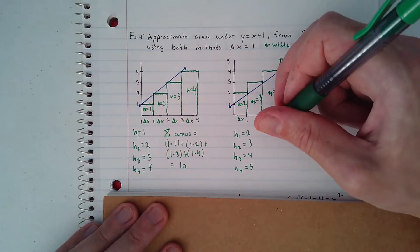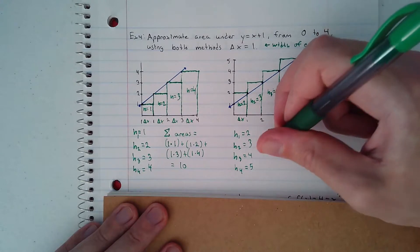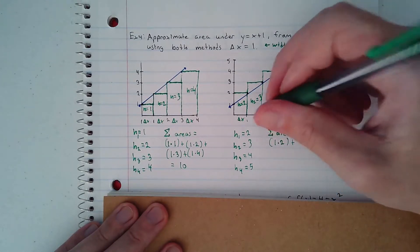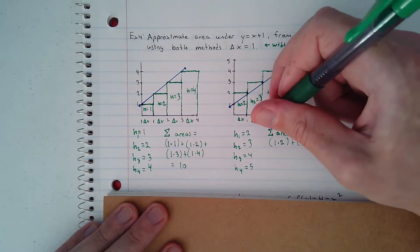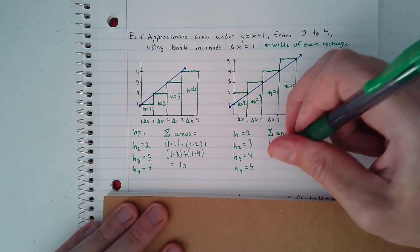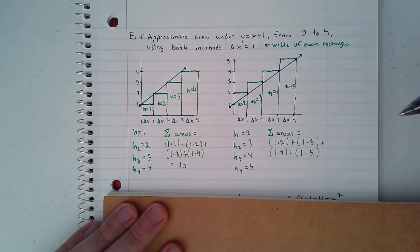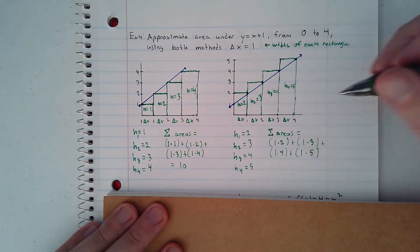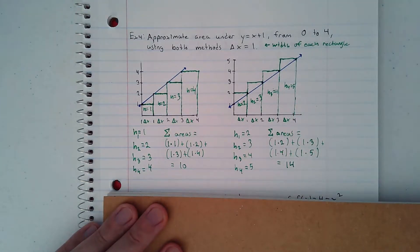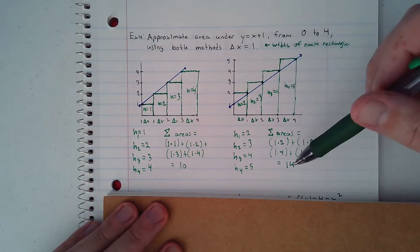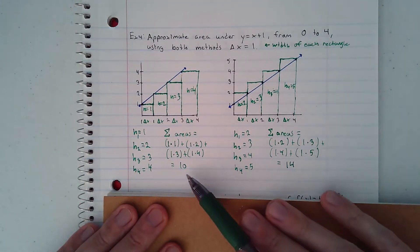Now we find the sum of the areas: width times height for each rectangle. The last rectangle is 1 times 5, and the total sum equals 14. So the approximate area using circumscribed rectangles is 14, and inscribed rectangles gave 10. The actual area would be somewhere in between those two numbers.